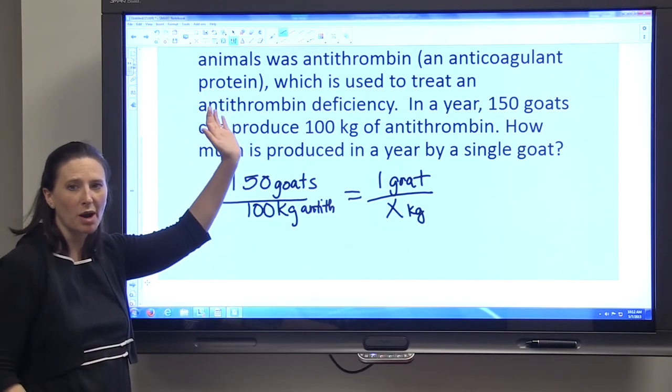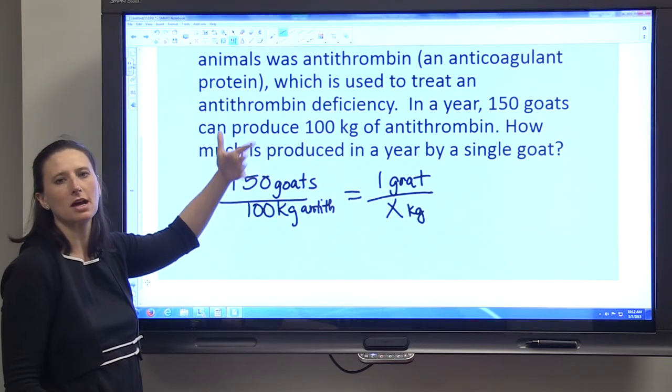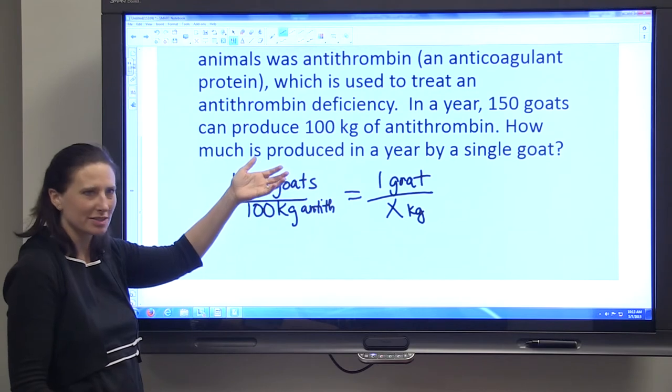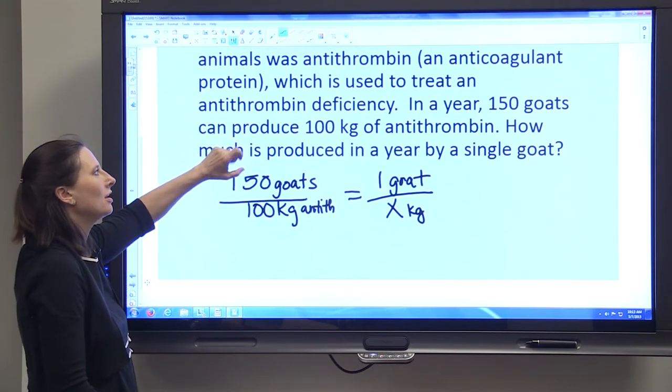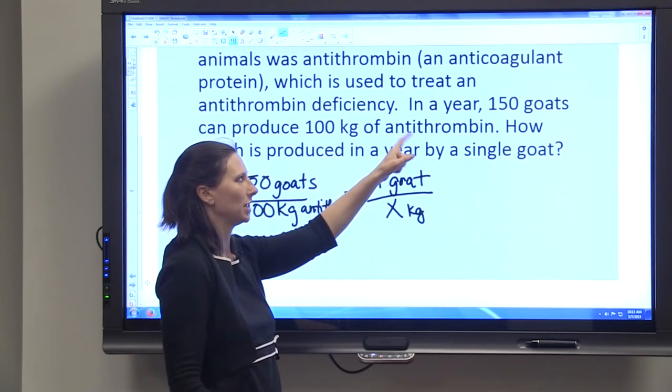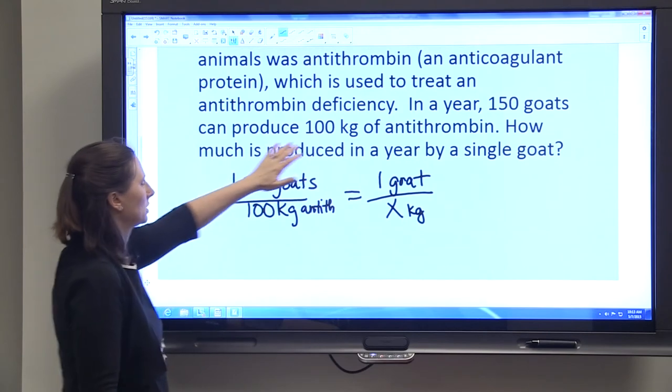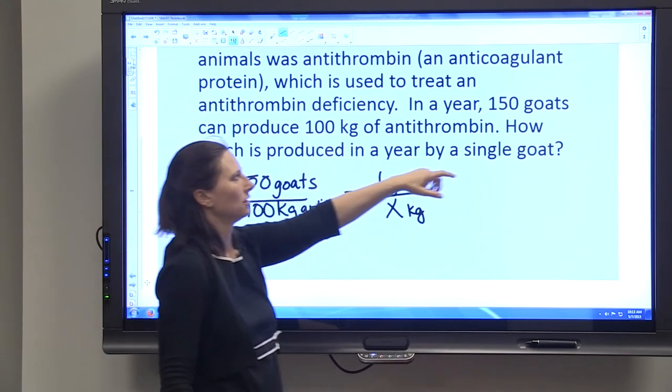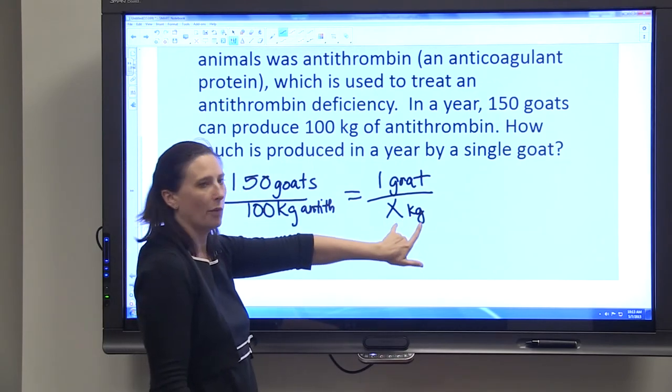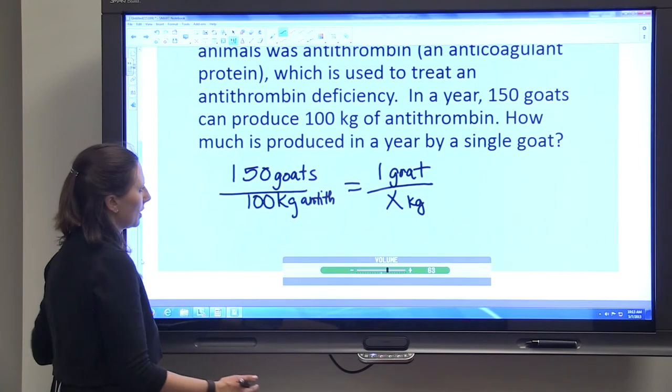That big long problem, you had to read it because you had to understand that the antithrombin was being produced by goats. It's important to know what you're dealing with, but really when you get down to it, it's very similar to our apples. We can know that we have a certain amount and a certain number of goats, and we need to determine what amount is produced by one goat.